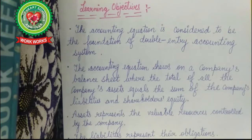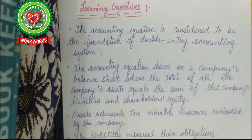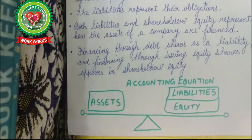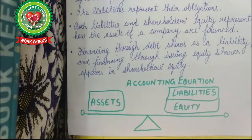This chapter is the basic chapter with a few numericals that will be the foundation of your whole accounting study. The accounting equation shows on a company's balance sheet where the total of all the company's assets equals the sum of the company's liabilities and shareholders' equity. Assets represent the valuable resources controlled by the company; liabilities represent their obligations. Both liabilities and shareholders' equity represent how the assets of a company are financed. Financing through debt shows as a liability, and financing through issuing equity shares appears in shareholders' equity.